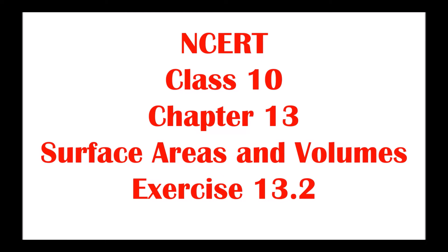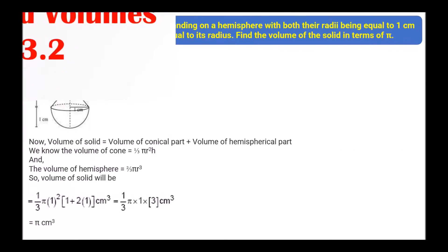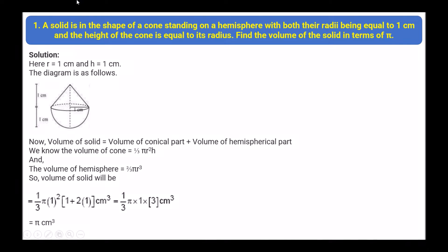Let's solve the textbook exercise. The first question: a solid is in the shape of a cone standing on a hemisphere, with both their radii being equal to 1 centimeter. The height of the cone is also equal to its radius. Find the volume of the solid in terms of pi. So r = 1 cm and h = 1 cm.